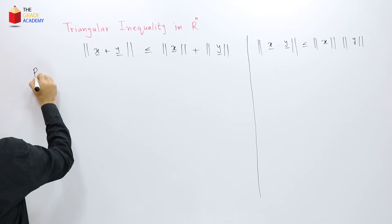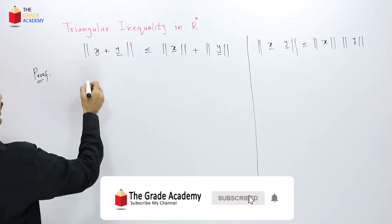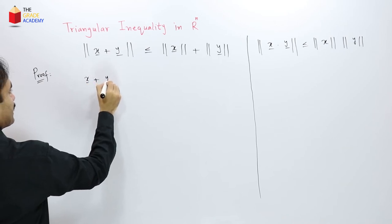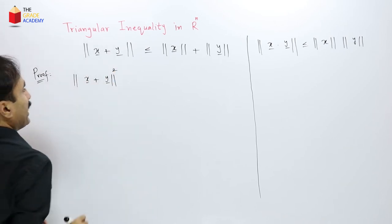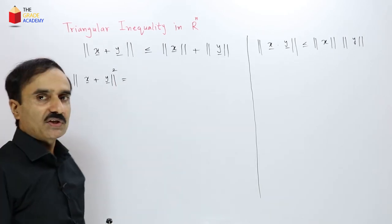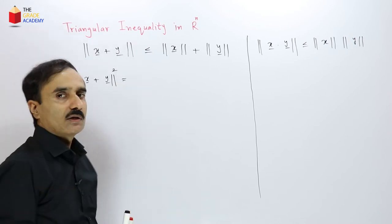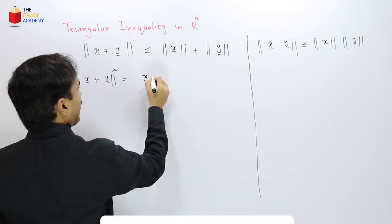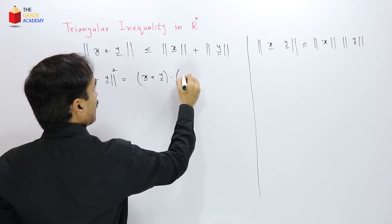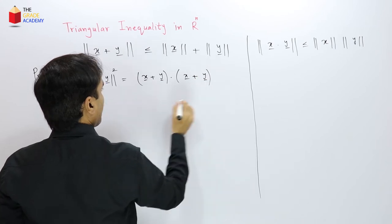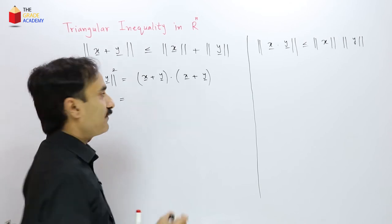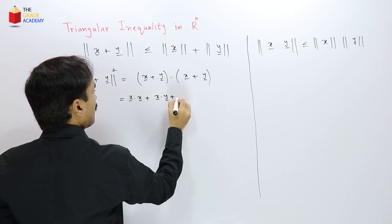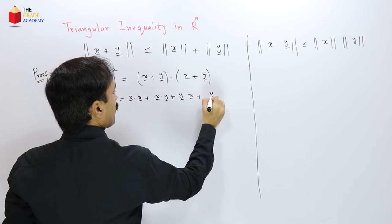So let's prove this. We consider the norm of x plus y, whole squared. By the definition of norm, the square of the norm of a vector equals the dot product of that vector with itself. So this can be written as (x + y) dotted with (x + y). Expanding this dot product, we get x·x plus x·y plus y·x plus y·y.